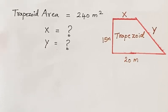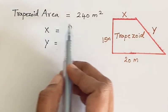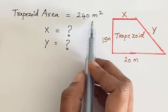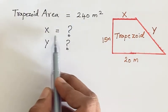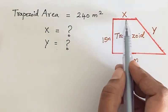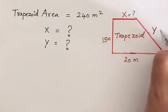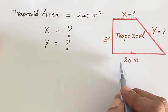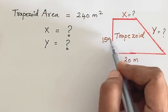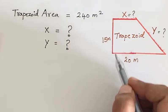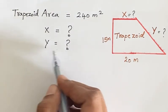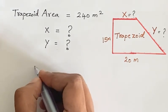Hello everyone, let's see how to solve this geometry problem. Given the area of the trapezoid is 240 square meters, what is the value of x and y? One of the base lengths of the trapezoid is 20 meters and the height is 50 meters. Let's find the value of x and y.